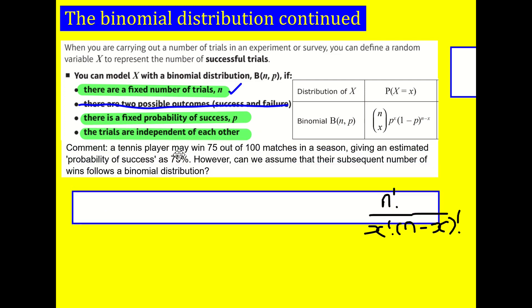One more little example. So a tennis player might win 75 out of 100 matches in a season, giving an estimated probability of success of 75%. However, can we assume their subsequent number of wins follows a binomial distribution? Well, we can give it a go. We can use it as a model. They can either win or lose, so two possible outcomes. There's going to be a fixed number of trials. If we say what's going to happen in the next 10 games, but how do we know that the other two are satisfied? A fixed probability of success. Well, it might depend on who they're playing, whether they're playing in a high ranking tournament or a low ranking tournament. And independent, maybe the games are going to get harder the further on they get in the tournaments. Or maybe it's going to depend on their form and injuries and so on.